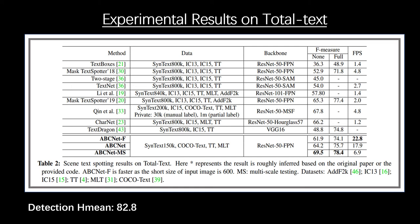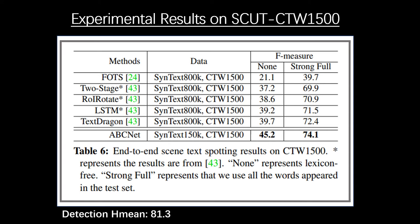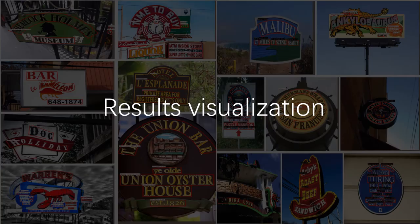This is the result on CTW-1500. It can be seen that with fewer synthetic datasets, our method is significantly better than the previous state-of-the-art. Here are some visual results. It can be seen that our method can detect and recognize both text line and word-level text.